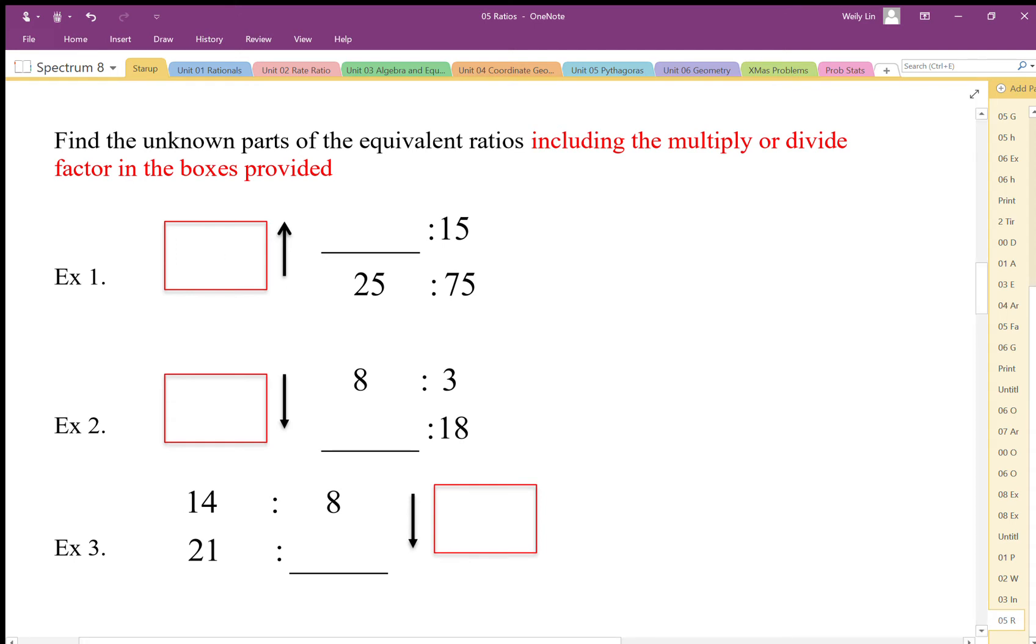For here we have 25 to 75 comparison. We want to know what the term is here that compares to 15. If we take a look at this, we can find our multiplier by just dividing. If I divide 75 by 15, I get times 5.